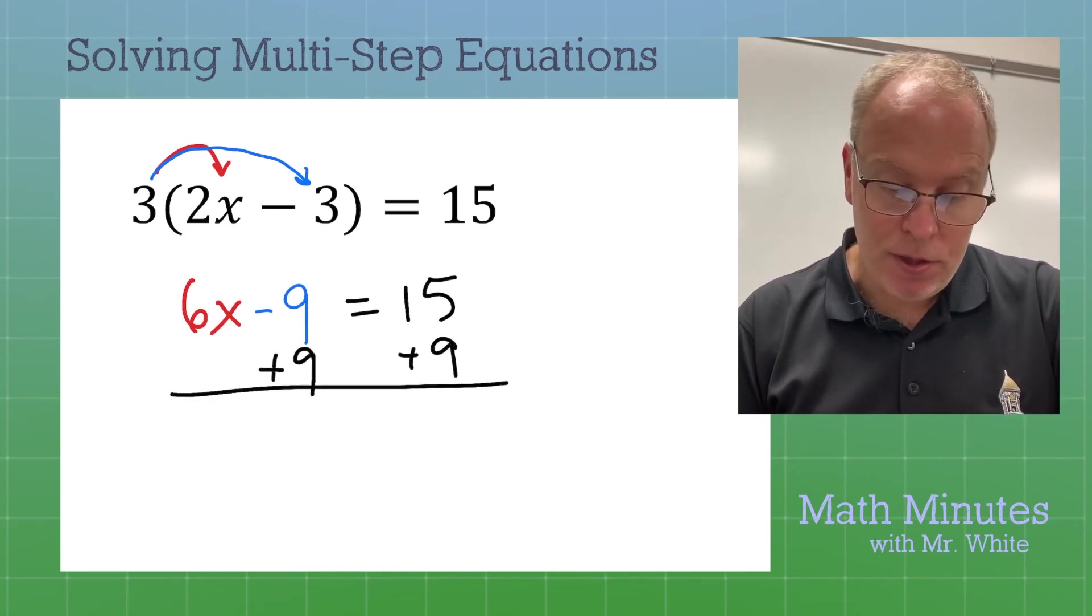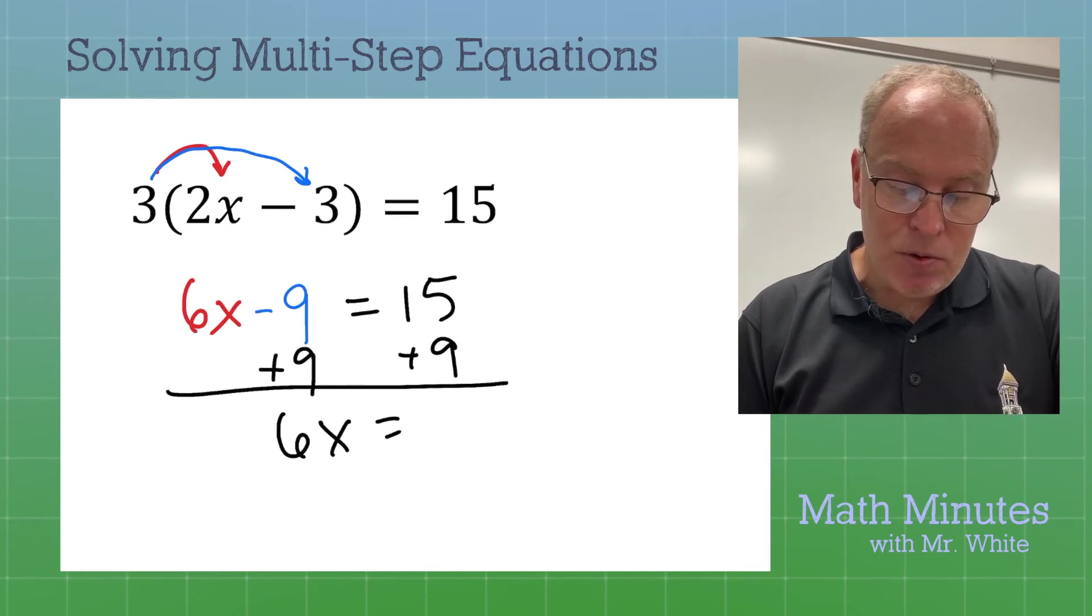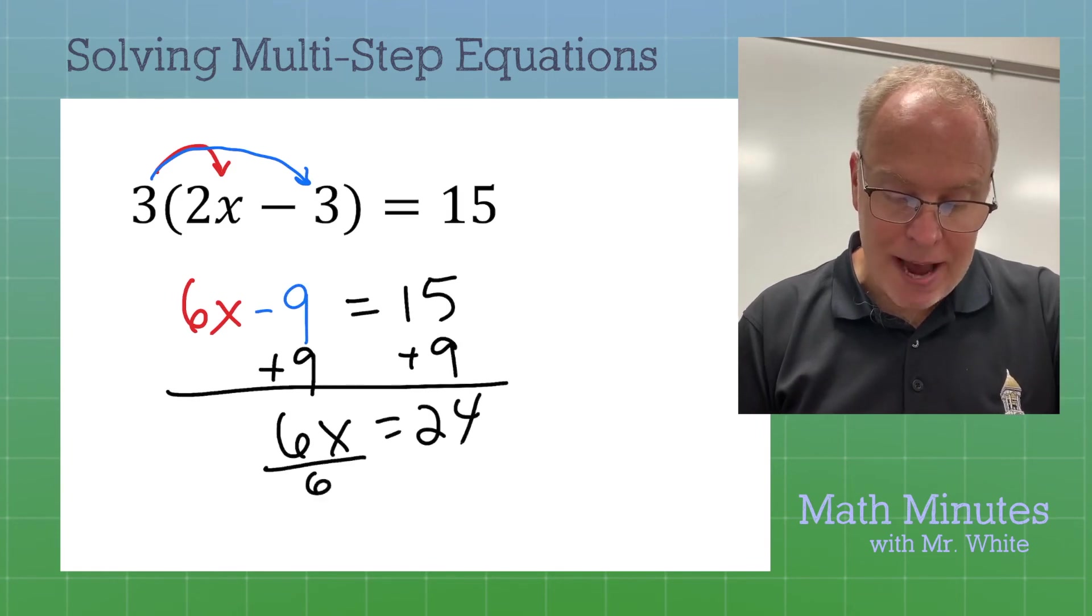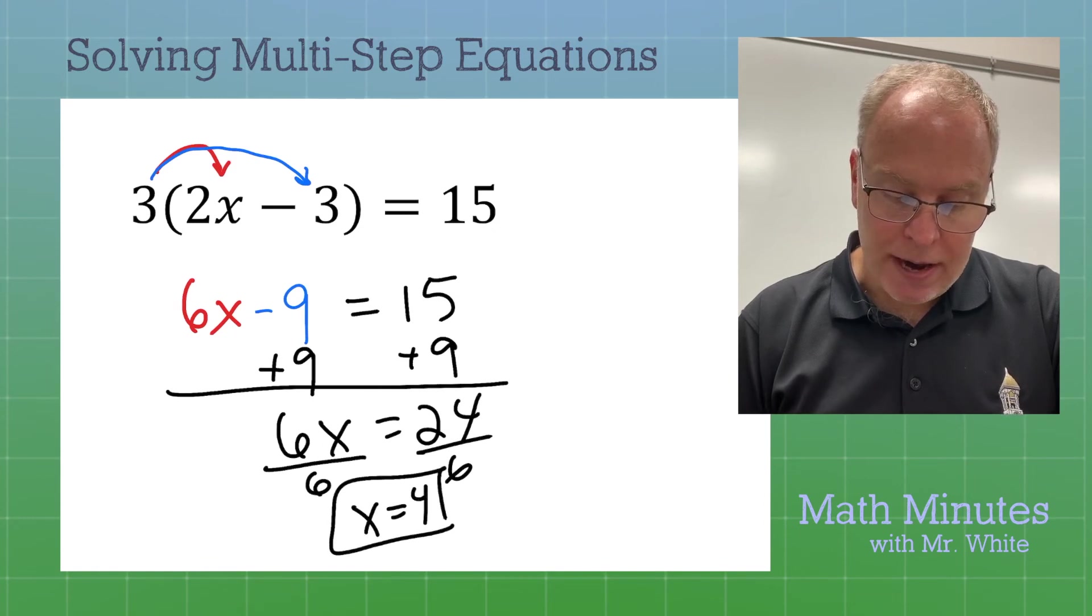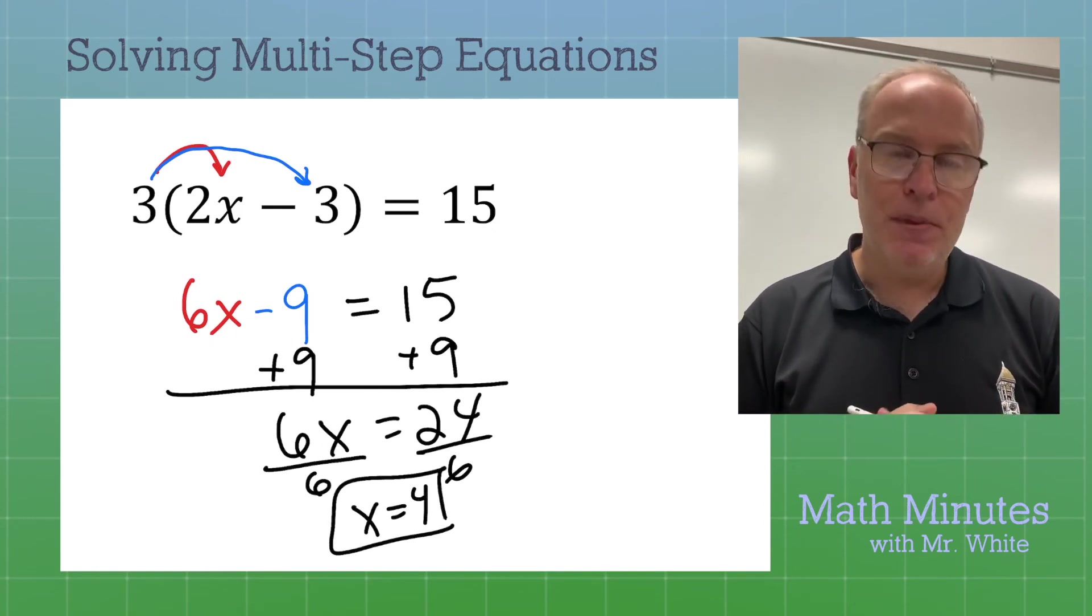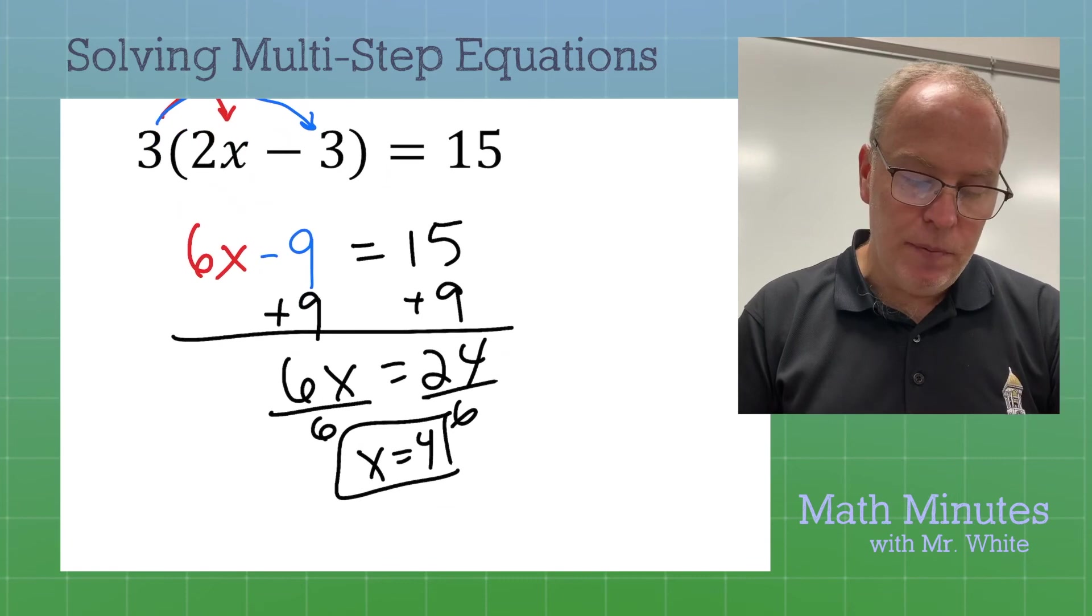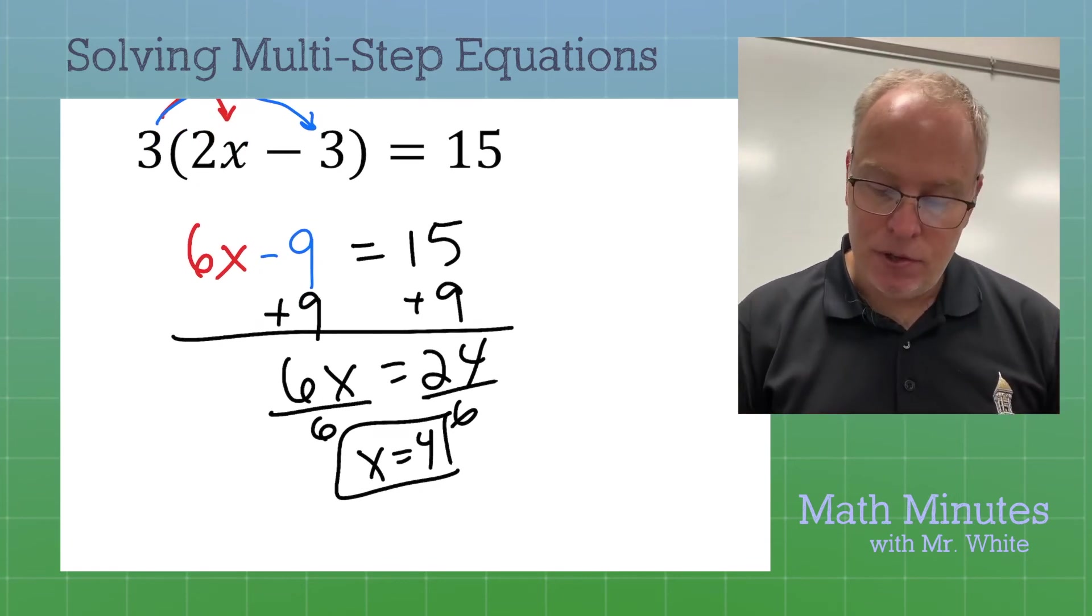Now, I'm going to go ahead and solve. You're probably getting good at this. 6x equals 24. We divide by 6. x equals 4 is our answer. x equals 4. That wasn't so bad. So, a little bit of distributive property there. And then we had our answer.